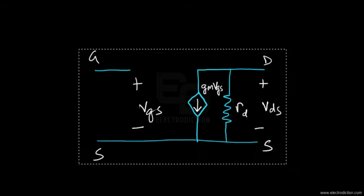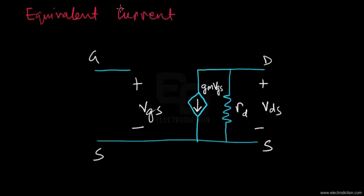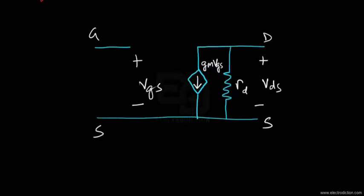Looking at the diagram, this is referred to as the equivalent current source model of the FET. In this equivalent current source model, the first observation is that the gate terminal is floating — we have a floating gate terminal. The gate not being connected to any other terminal indicates that the input resistance is very high.